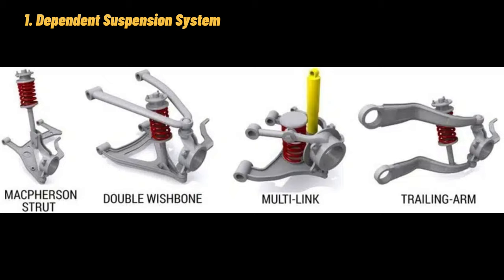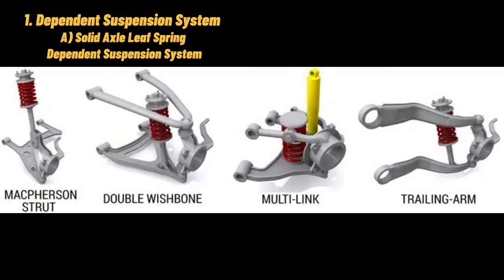Dependent Rear Suspension Types. A. Solid axle leaf spring dependent suspension system. In this type, leaf springs are used as suspension members. The longest spring in the setup bends into a circle to form a spring's eye. This spring's eye is bolted to the spring hanger, and the other end is attached to the shackle. This shackle allows a change in the length of the leaf spring when it bends. The shackle also includes a rubber bushing which absorbs vibrations. The center portion of the leaf spring is attached to the rear end axle housing with U-bolts, and a rebound clip holds all the springs together.